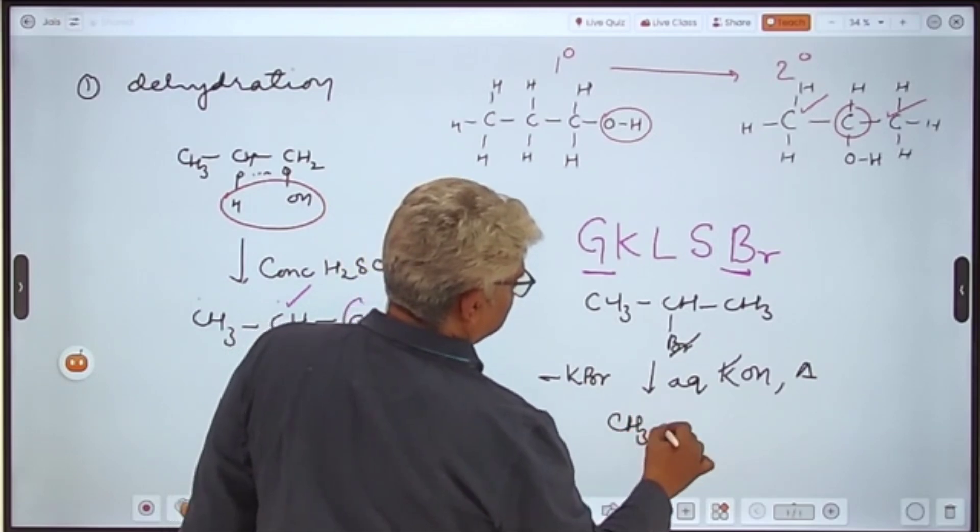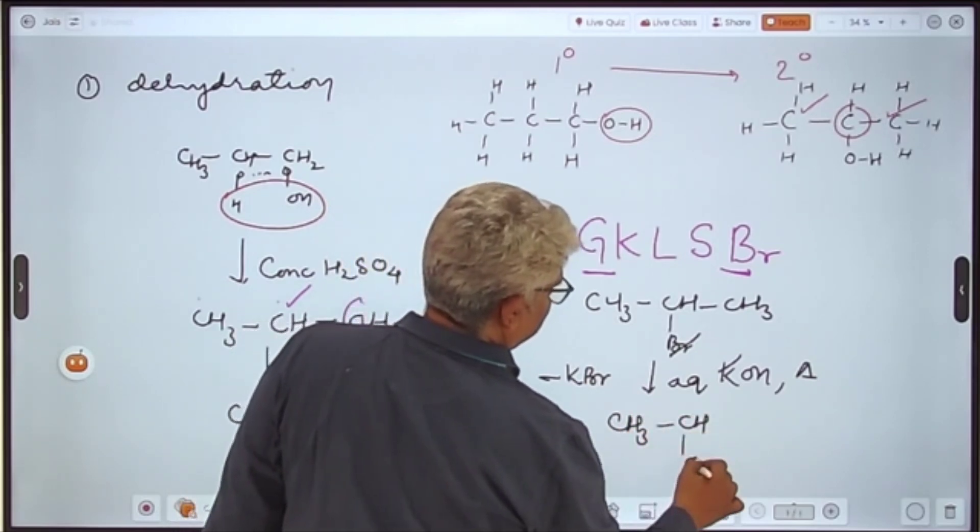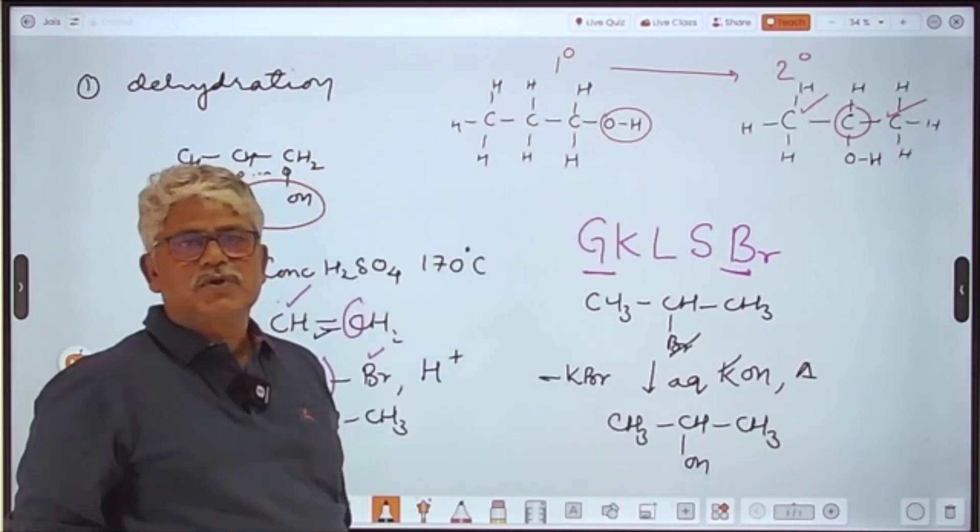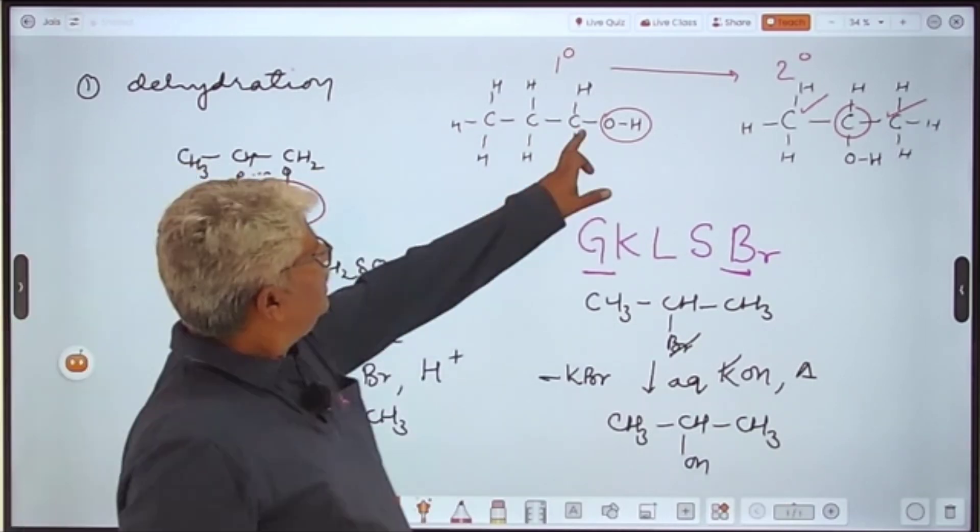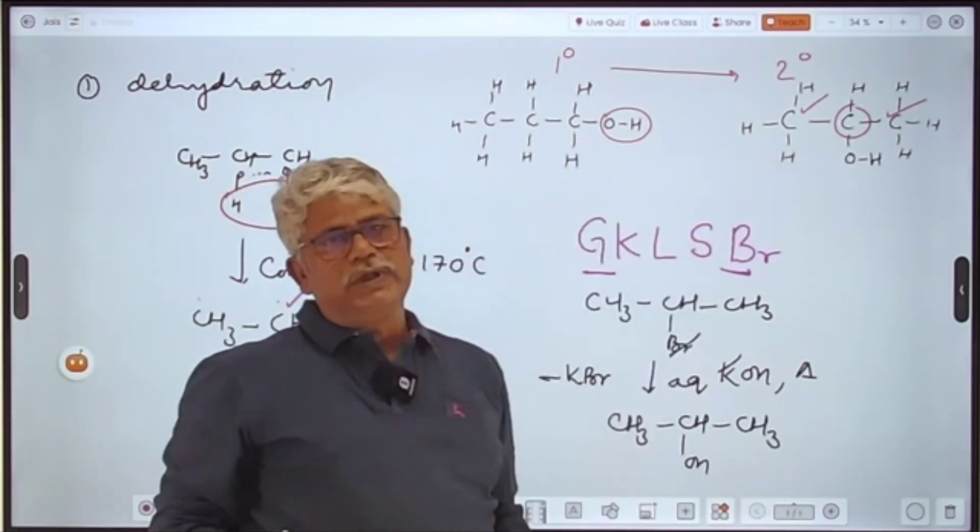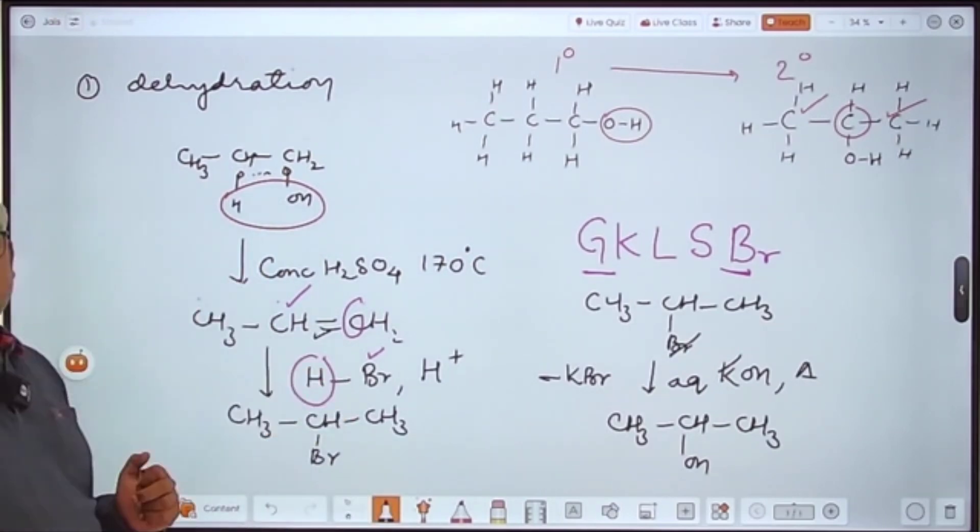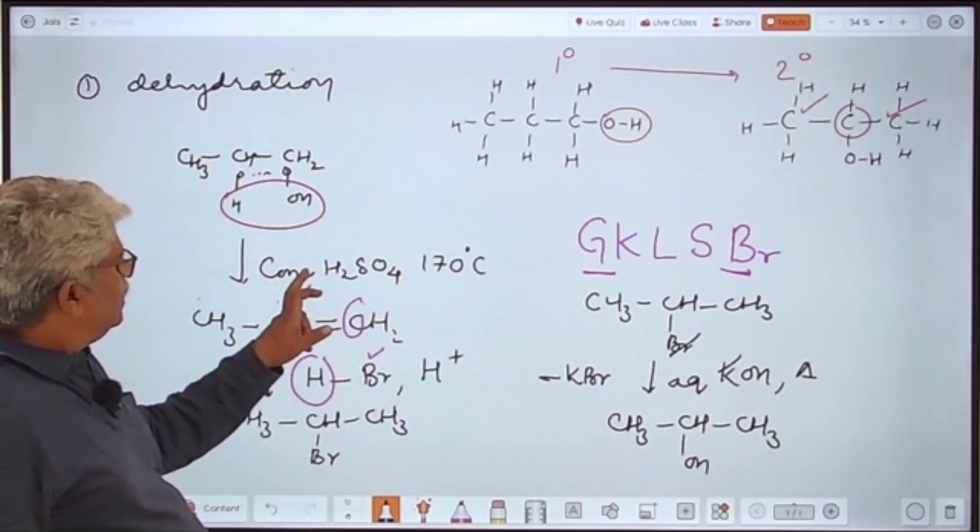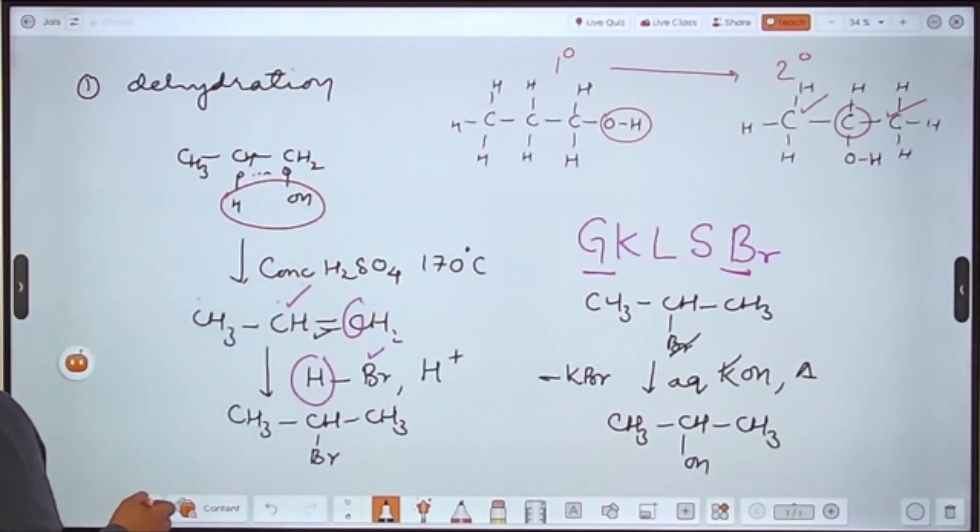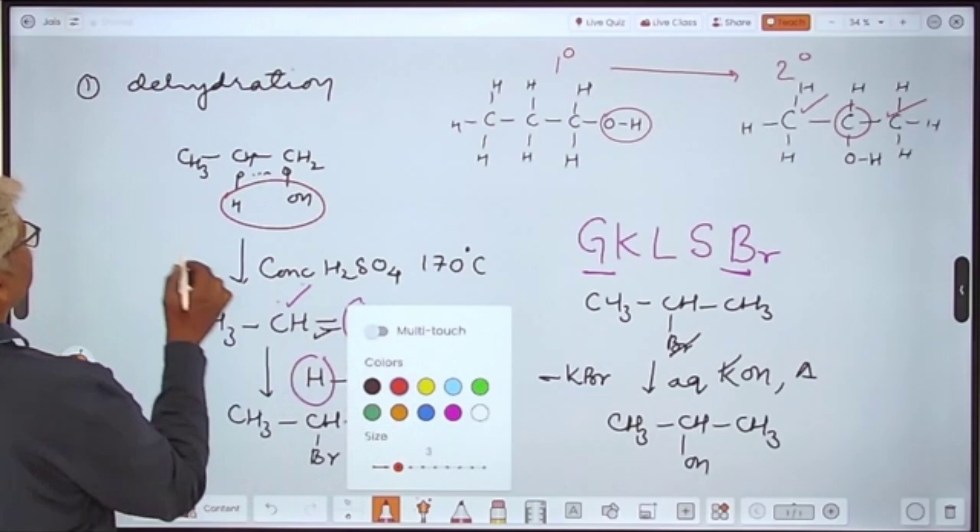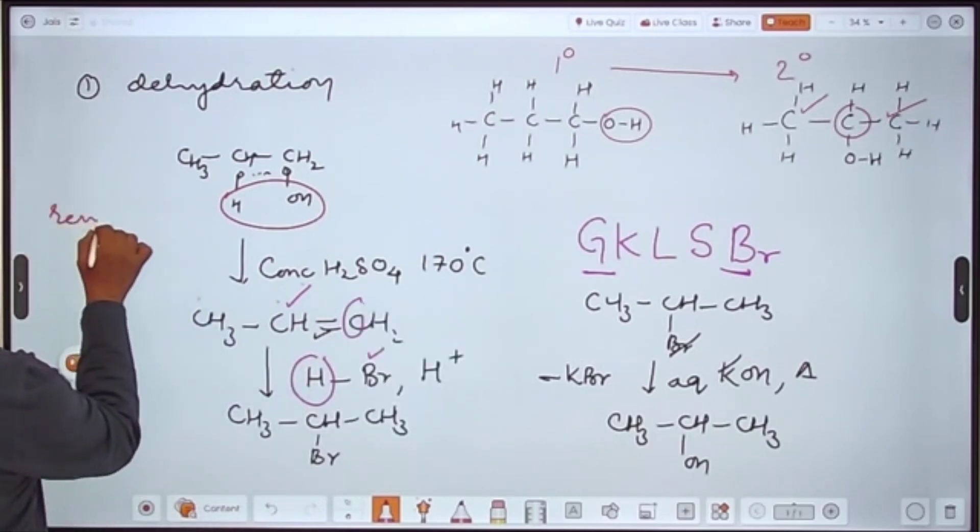And 2 degree alcohol is formed. So we started from 1 degree alcohol to 2 degree by only how many steps? Three steps. First one was dehydration, which is called removal of chemically combined water.